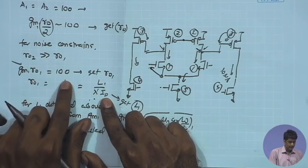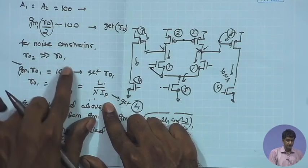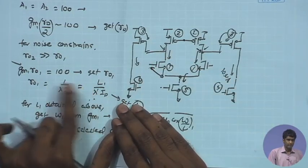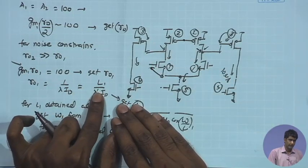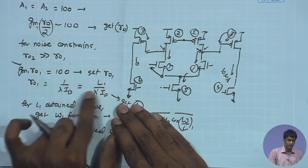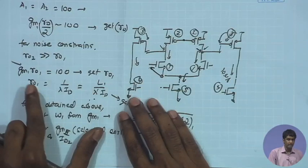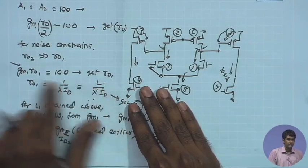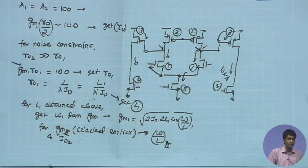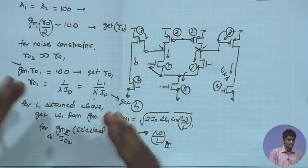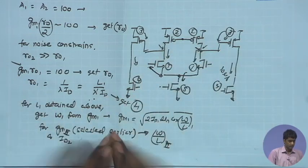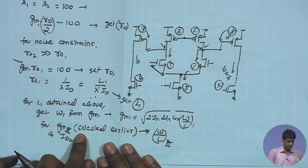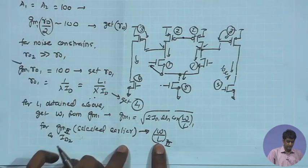With gm1 known from previous steps, I need to find ro1. Since ro1 = 1/(λ·ID) and the ID budget is fixed, I can determine the required channel length L. A larger L gives a larger ro for a given current. This sets the minimum L1 to meet the ro1 requirement. Once L1 is set, and W1/L1 ratio was determined earlier, I can compute W1.